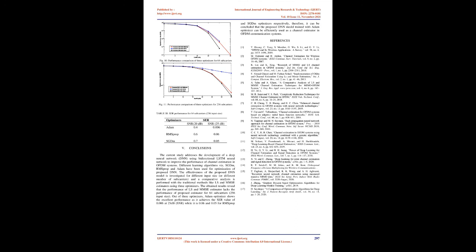V. Conclusions. The current study addresses the development of a deep neural network (DNN) using bidirectional LSTM neural network to improve the performance of channel estimation in OFDM systems. Different learning algorithms—SGDM, RMSProp, and Adam—have been used for optimization of the proposed DNN. The effectiveness of the proposed DNN model is investigated for different input sizes (or different number of sub-carriers), and a comparative analysis is performed with the traditional methods like LS and MMSE estimators using three optimizers. The obtained results reveal that the performance of LS and MMSE estimator lacks the performance of the proposed estimator for 64 sub-carriers (256 input size). Out of three optimizers, Adam optimizer shows the excellent performance as it achieves the SER value of 0.006 at 25 dB SNR, while it is 0.06 and 0.05 for RMSProp and SGDM optimizers respectively. Therefore, it can be concluded that the proposed DNN model trained with Adam optimizer can be efficiently used as a channel estimator in OFDM communication systems.